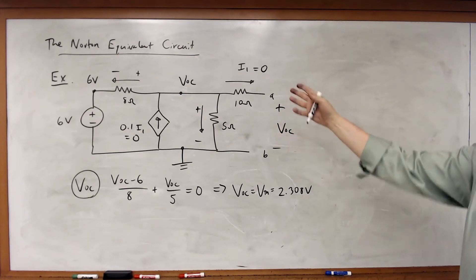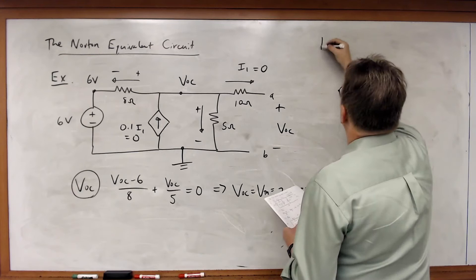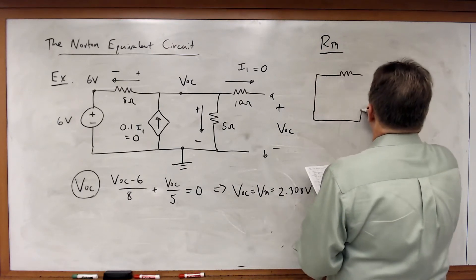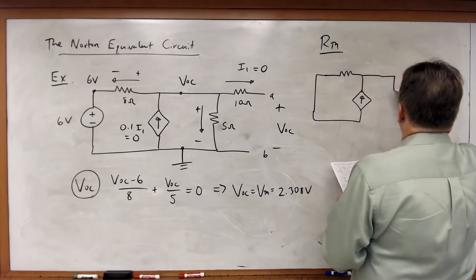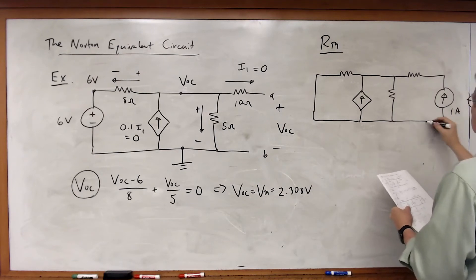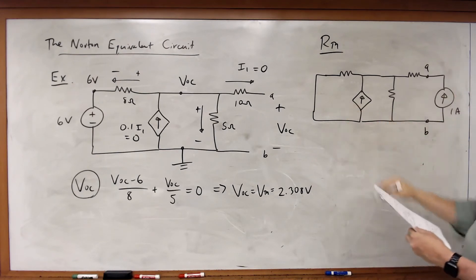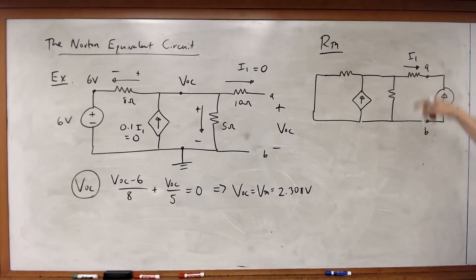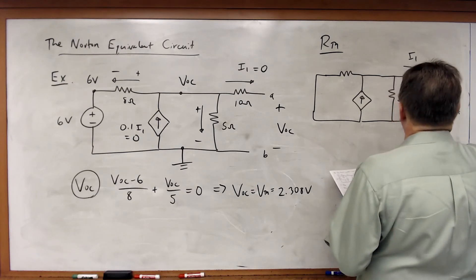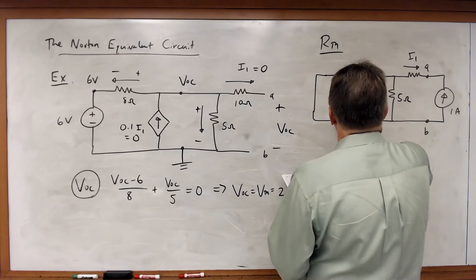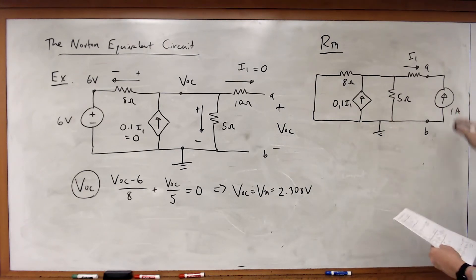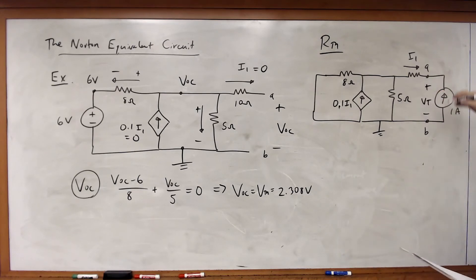Now let's calculate the Thevenin equivalent resistance. For R_TH, I zero out the 6 volt source. Once again, I'm going to use a 1 amp source for the source driving technique because of that dependent source. Obviously I can no longer say that I1 is equal to zero — I've got something connected between nodes A and B. I'm going to ground the bottom node and find my V_T voltage across the 1 amp source. I'm going to call this node voltage V1.